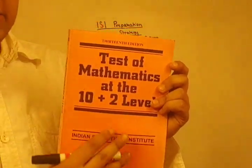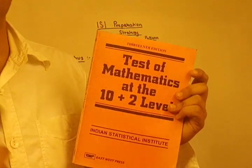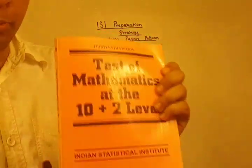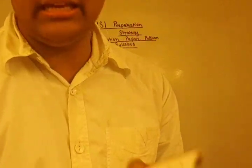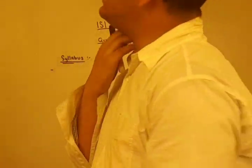The book I am showing is 'Test of Mathematics at 10+2 Level,' published by the Indian Statistical Institute. Every aspirant of ISI — this book is a must. You might not get it in the pink cover as shown; you might get it in some other cover because the edition has changed and they update it year by year. This book is published directly from the Indian Statistical Institute. You get a bunch of questions to practice thoroughly and become familiar with. The syllabus of ISI is given in the back page of this book.